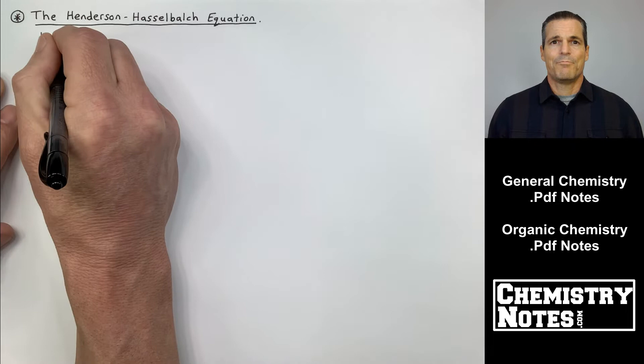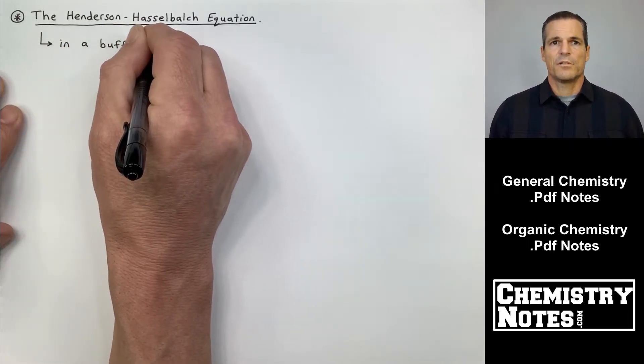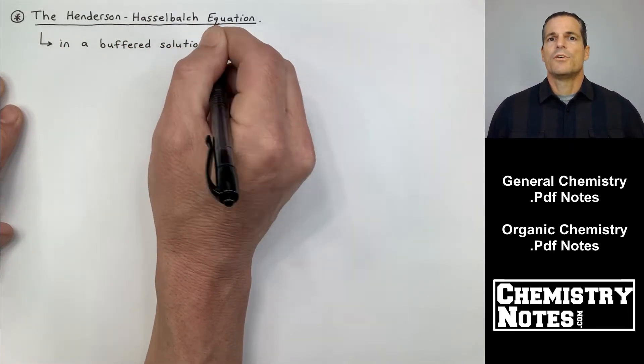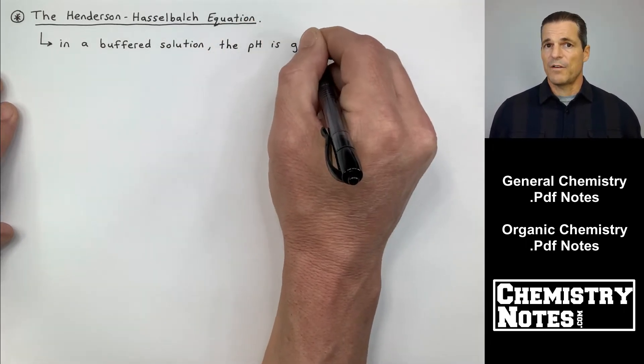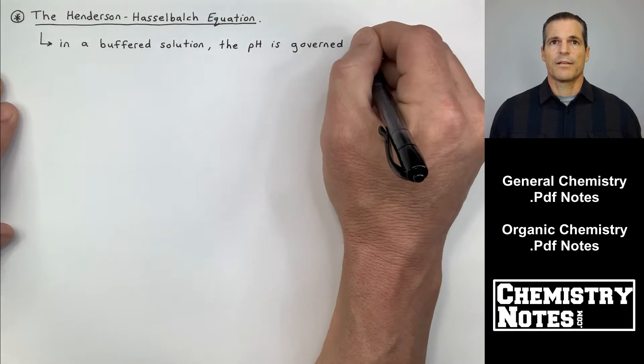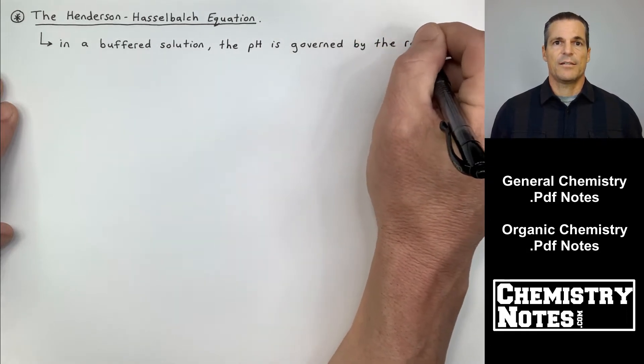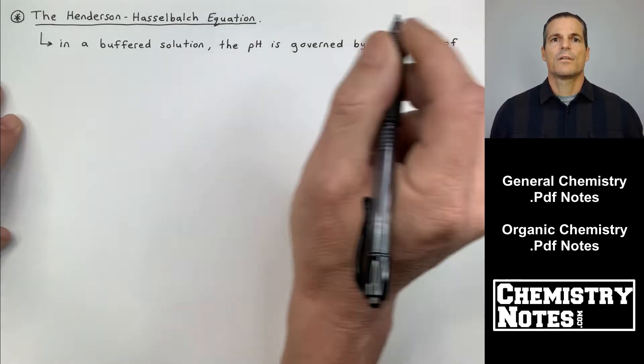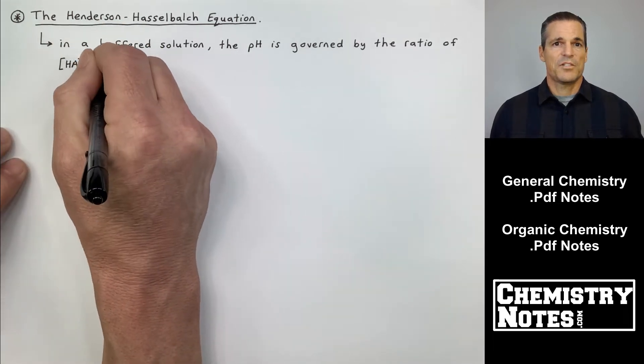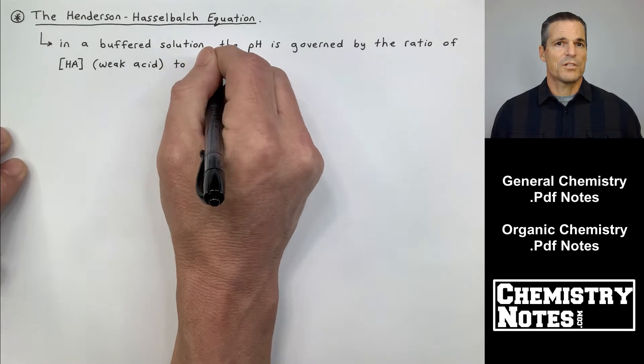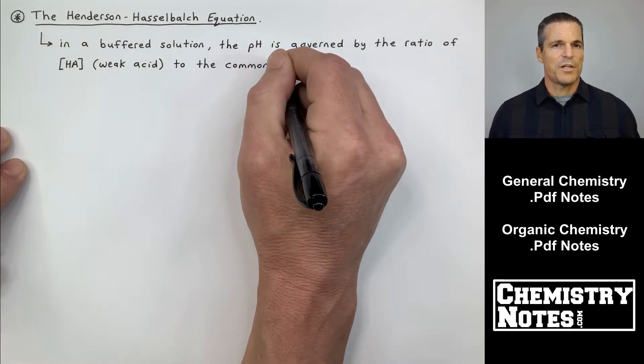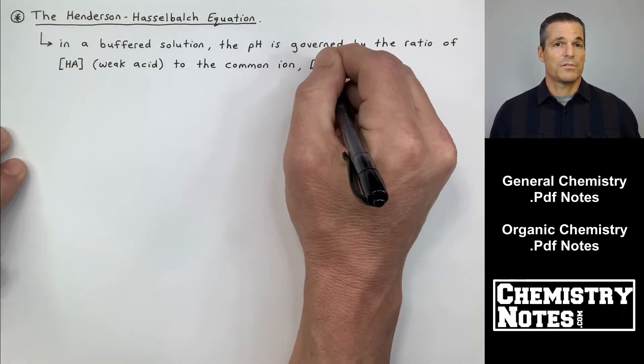It's essentially buffers and for right now it's buffer solutions and using a common ion to make a buffer, and then once the buffer has been constructed, like for example acetic acid with acetate solution, how does it respond upon the addition of strong base and strong acid? Why is it that the pH doesn't change too much when we add such a strong base or a strong acid?